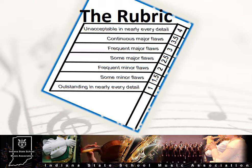We are now entering the territory of a less than polished performance, with some less than careful preparation evident. The last three point values — 3 for frequent major flaws, 3.5 for continuous major flaws, and 4 for unacceptable in nearly every detail — should be used sparingly, except in obvious cases of careless performance and preparation.